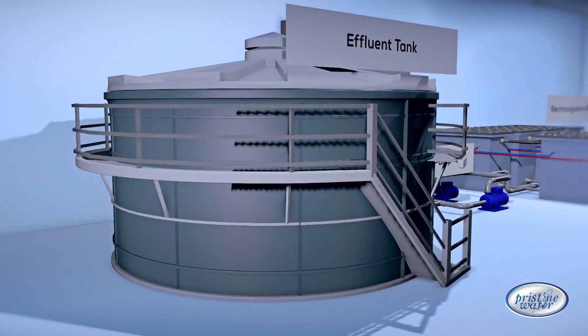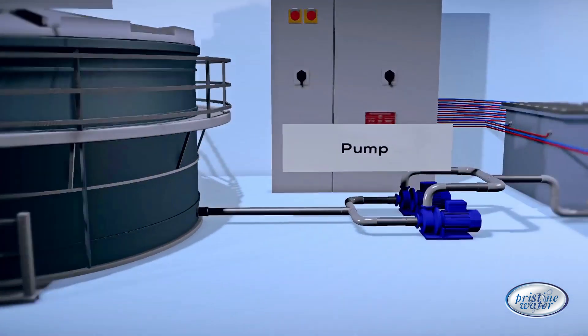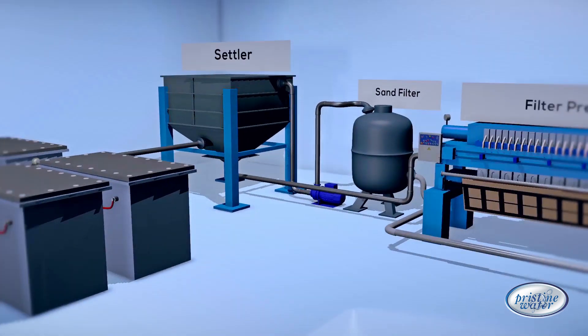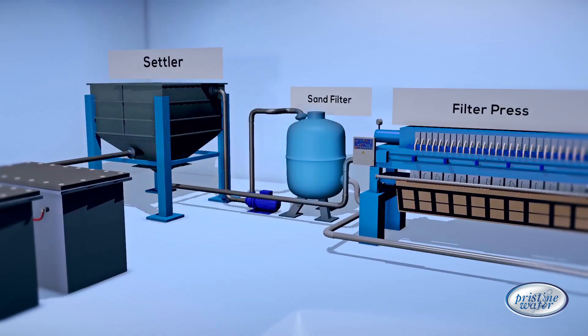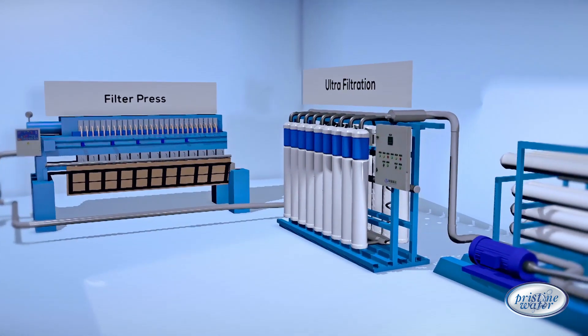The Pristine Water ECOAG system consists mainly of an effluent tank, pump, electrocoagulation reactor, settler and sand filter, filter press, ultrafiltration and RO.